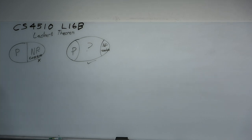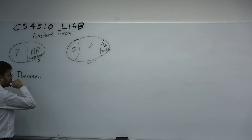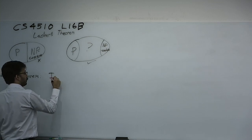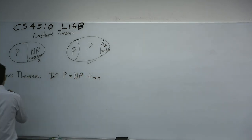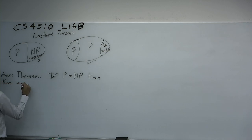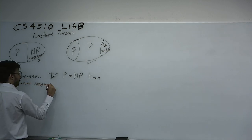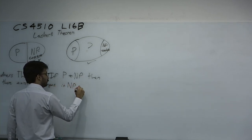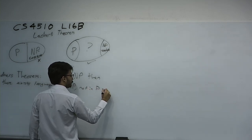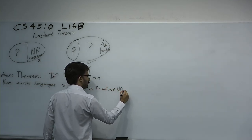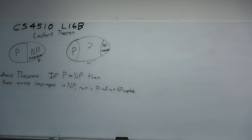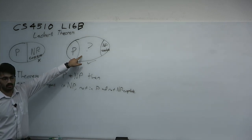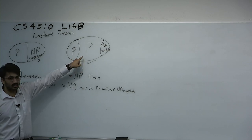Ladner's theorem essentially is one statement: if P does not equal NP — so you get to have that as an assumption — then there exist languages in NP, not in P, and not NP-complete. That's basically the idea of Ladner's theorem. It's basically saying this middle region is not empty. If P does not equal NP, and of course everything is conditional on that, then this thing here is not empty.